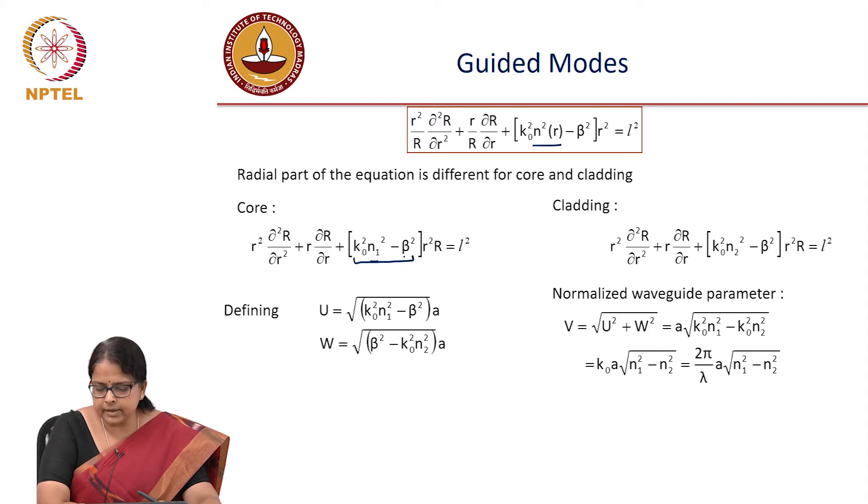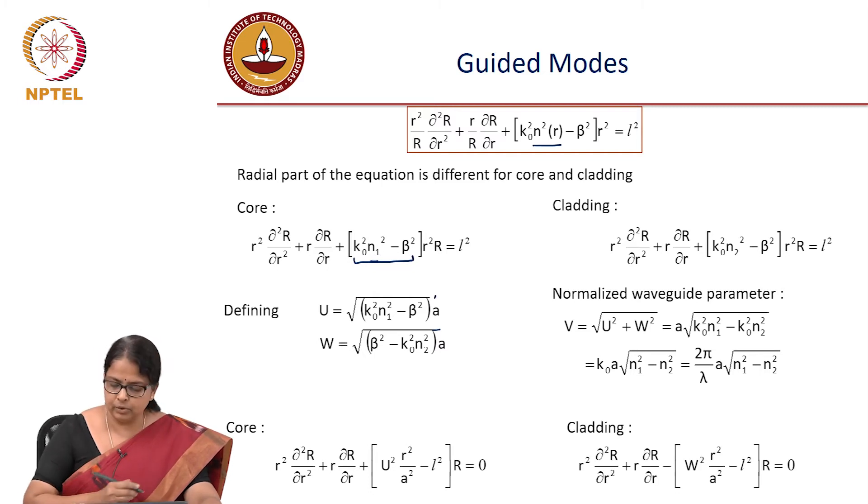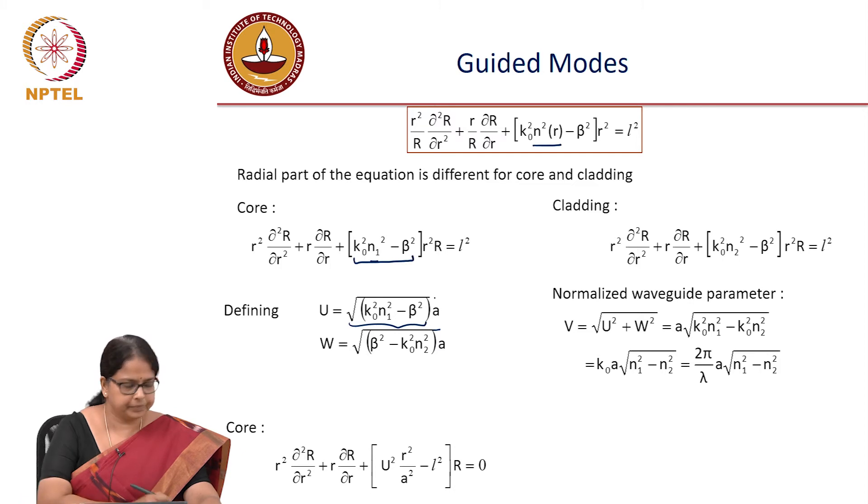So, we can rewrite the differential equations in the core and the cladding in terms of this u and w. u by a is this, so u square, so a should be outside the root, not under root. So that u by a is this number and this is square of u by a, so u square by a square minus l square which came from here.